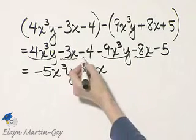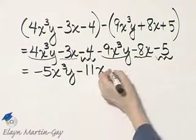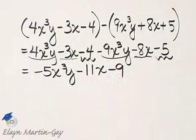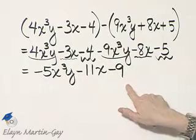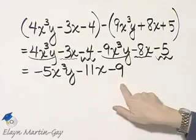And then we still have a few more like terms. We have negative 4 minus 5, and that is negative 9. Can I simplify further? The answer is no because these are all now unlike terms.